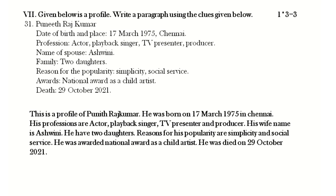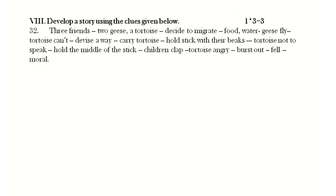The 32nd question: develop a story using the clues given below. The clues are: three friends — two geese and a tortoise — decide to migrate due to drought; geese can fly but tortoise cannot; they devise a plan to carry the tortoise holding a stick with their beaks; the tortoise must not speak while holding the middle of the stick; children clap and laugh; the tortoise becomes angry, bursts out speaking, and falls down. The moral follows.